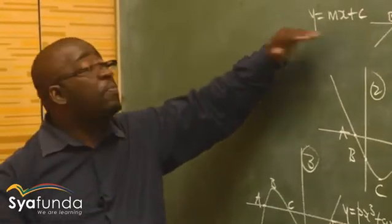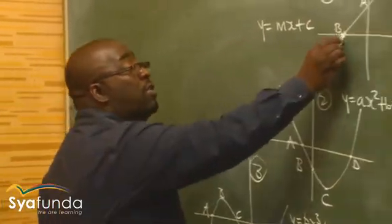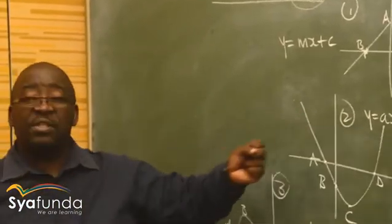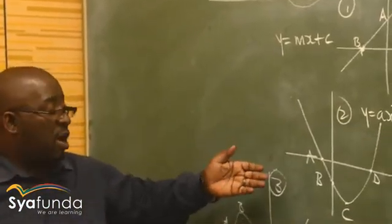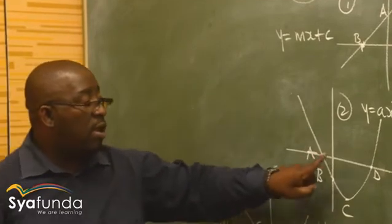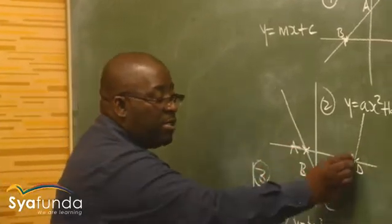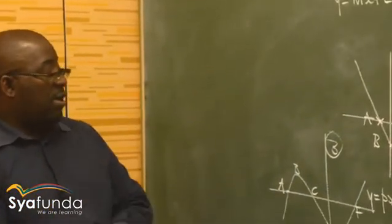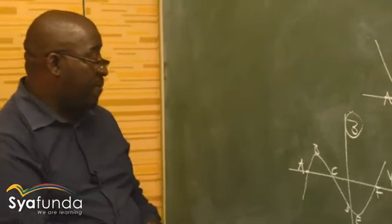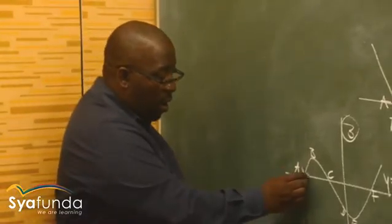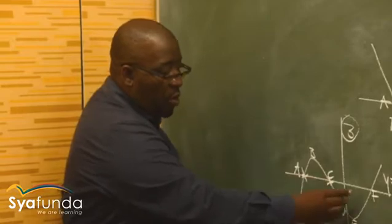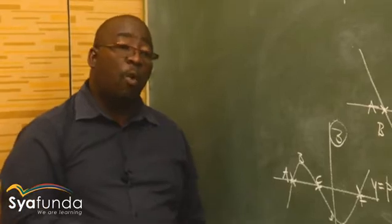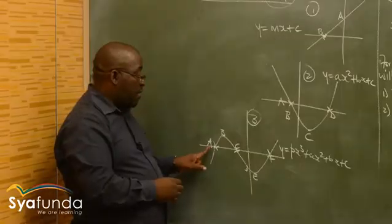The first graph has only one root, which is point B. Looking at graph number two, the quadratic function, it has two roots: point A and point D. Looking at graph number three, the cubic graph, there are three roots: point A, point C, and point F. We call them zeros.